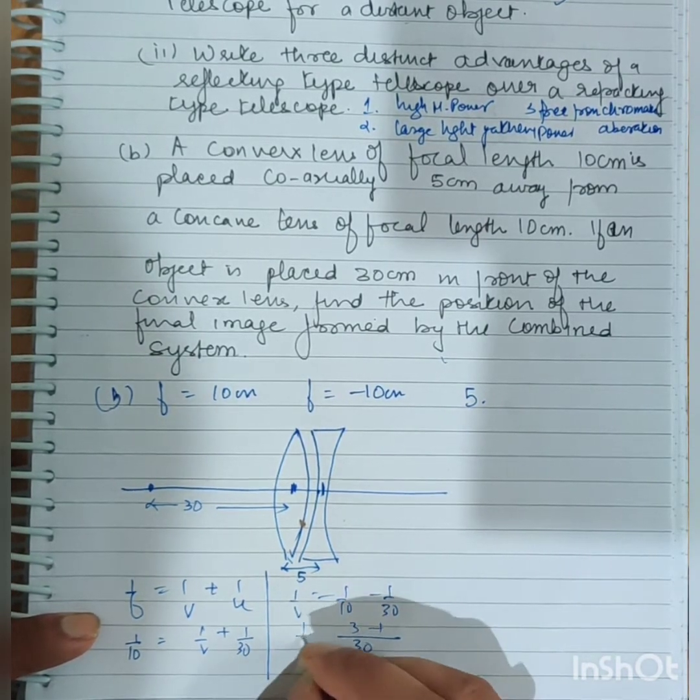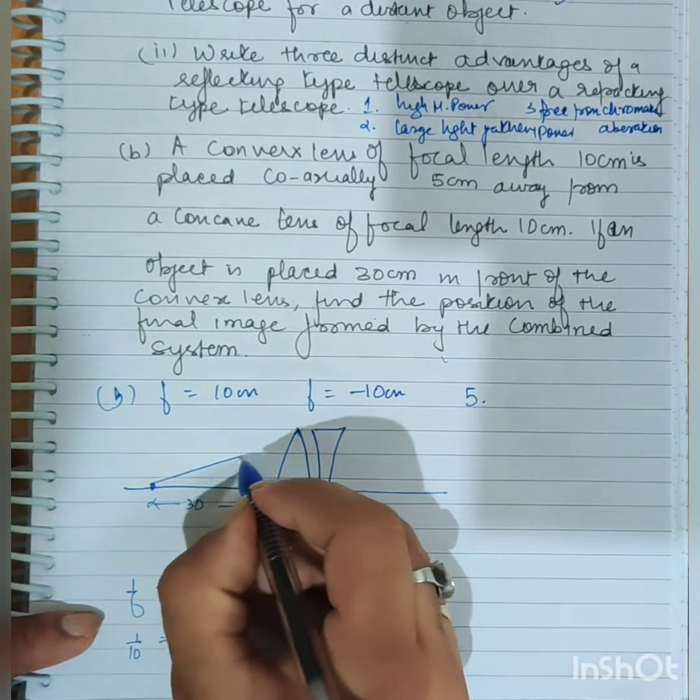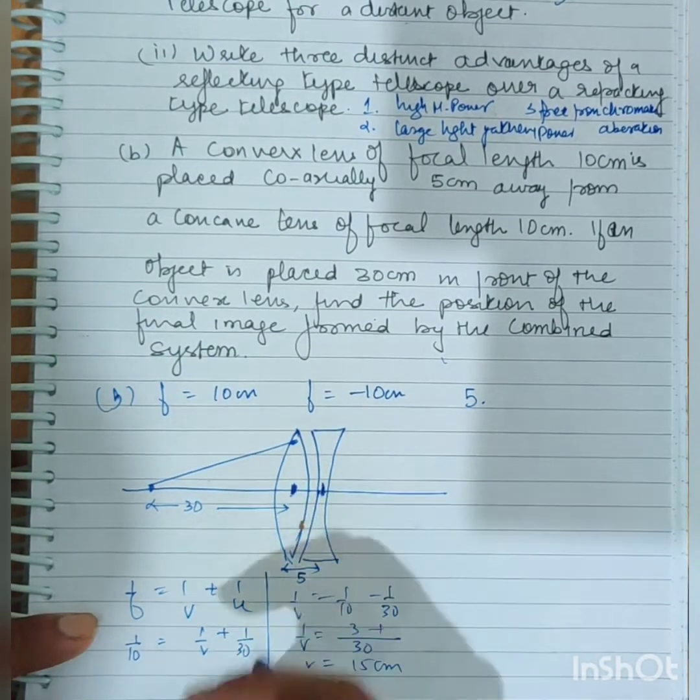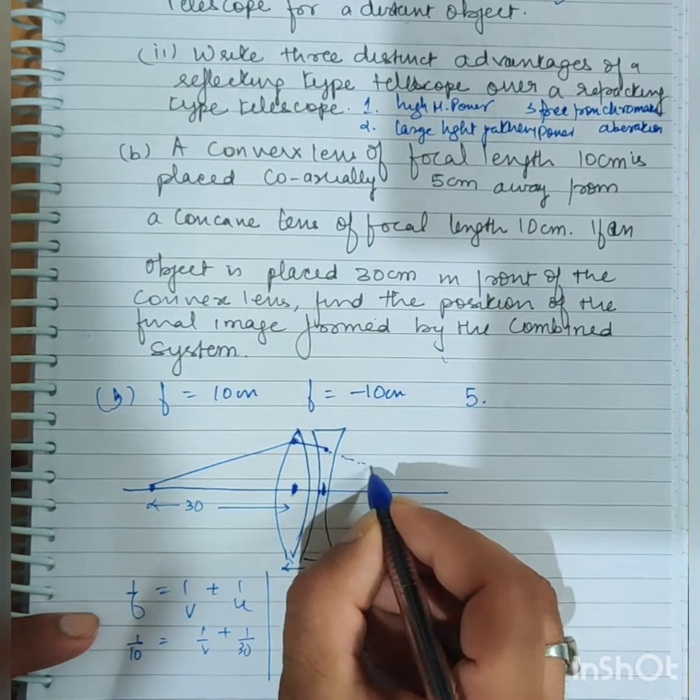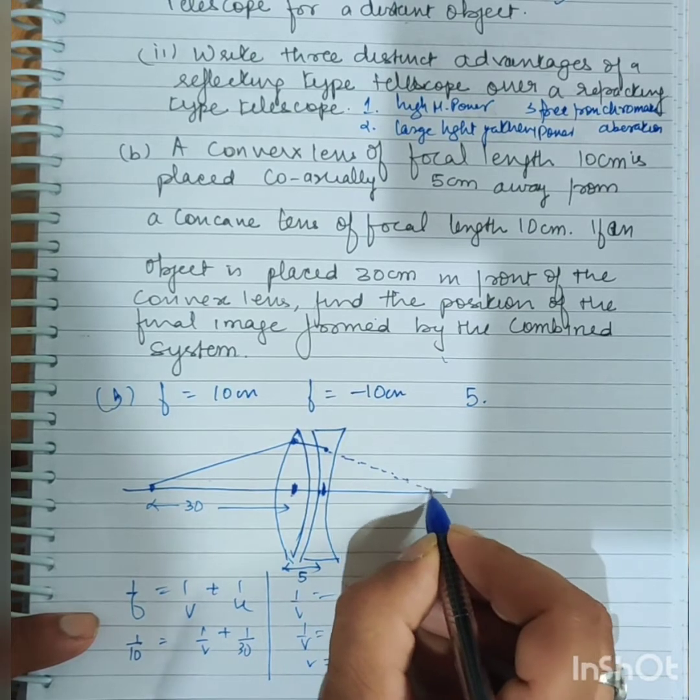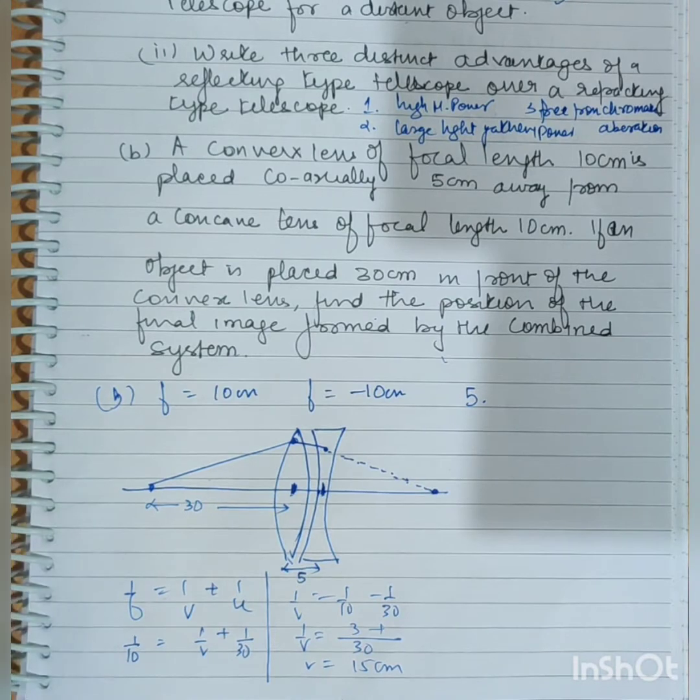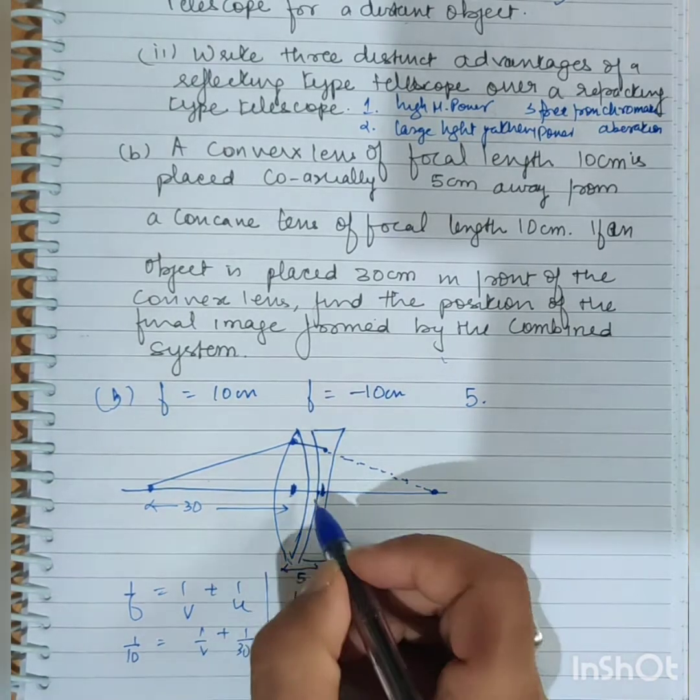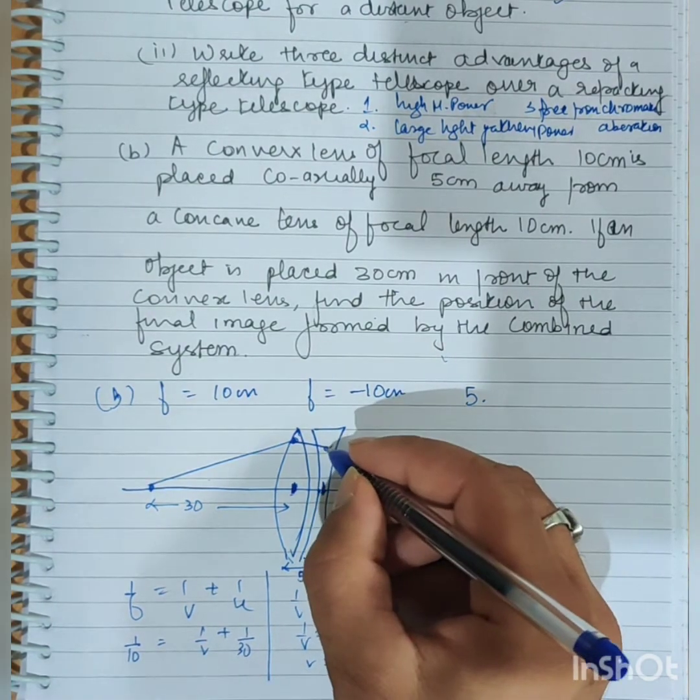3 minus 1, 1 by V equals 2 by 30, and we get V equals 15 cm. So this is your second lens, the concave lens, 5 cm away from the first lens.